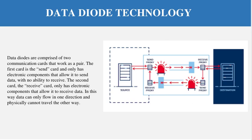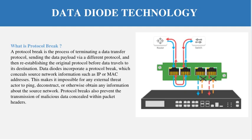The data diode also incorporates a protocol breaker. Protocol breaking is the process of terminating a data transfer protocol, sending the data payload via a different protocol, and then re-establishing the original protocol before data travels to its destination. This protocol break removes source network information such as IP or MAC addresses, making it impossible for any external threat actor to ping, disconnect, or obtain information about the source network.